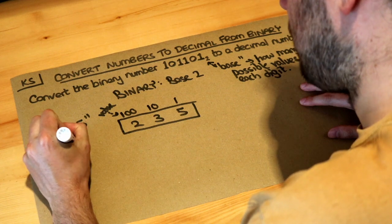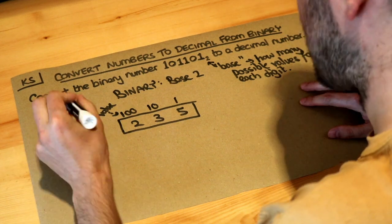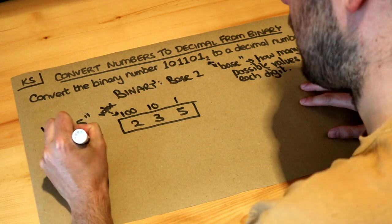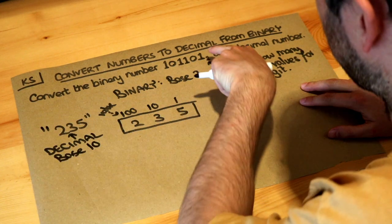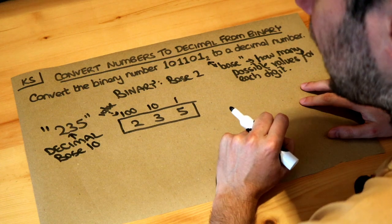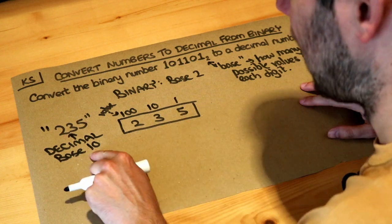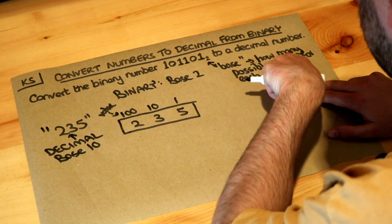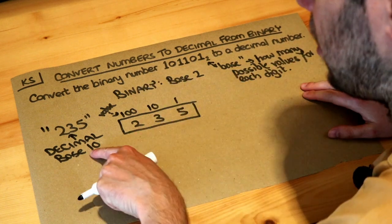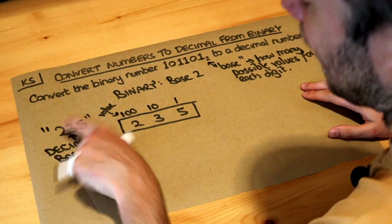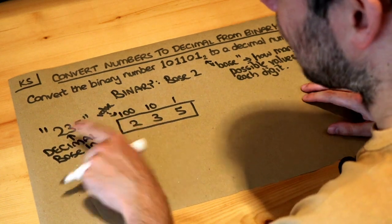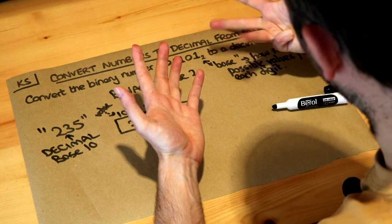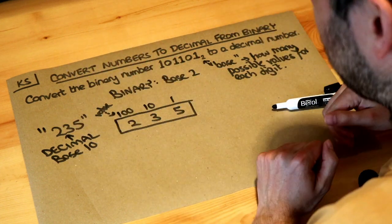This is a normal number — we call it a decimal number. You might recognise 'dec' meaning 10, and decimal numbers are base 10. That doesn't necessarily mean we have a decimal point; it just means the number is in base 10. So if it's base 10, there are 10 possible values for each digit: 0, 1, 2, 3, 4, 5, 6, 7, 8, 9 — that's 10 possible values.